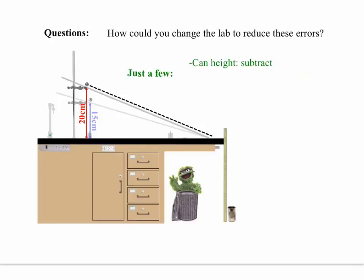As for eliminating any error caused by not accounting for the can height, well, simply account for the can height. Measure its height, subtract that value from the height of the table, and recalculate the time the ball spends moving from the top of the table down to the can, as well as the horizontal distance the ball travels during that time.